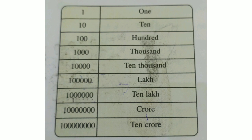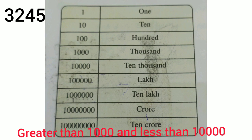So dear friends, now I will show you a table. Can you see the table? It's there in your textbook, page number 9. Look at the table and find two numbers between which the number 3245 lies. Our number 3245 is greater than 1000 and less than 10,000. So 3245 will come between 1000 and 10,000.